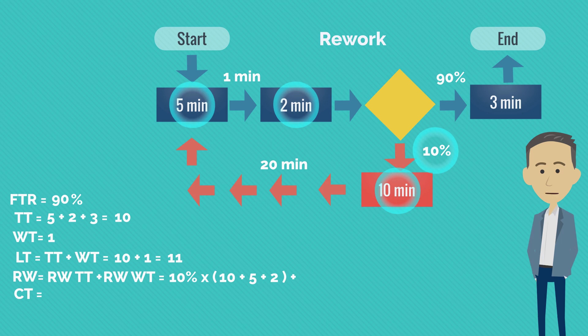For rework waiting time, we have the same 10% multiplied with the 20 minutes and the 1 minute waiting time. So my rework loop has 1.7 minutes of touch time and 2.1 minutes of waiting time, in total, 3.8 minutes.